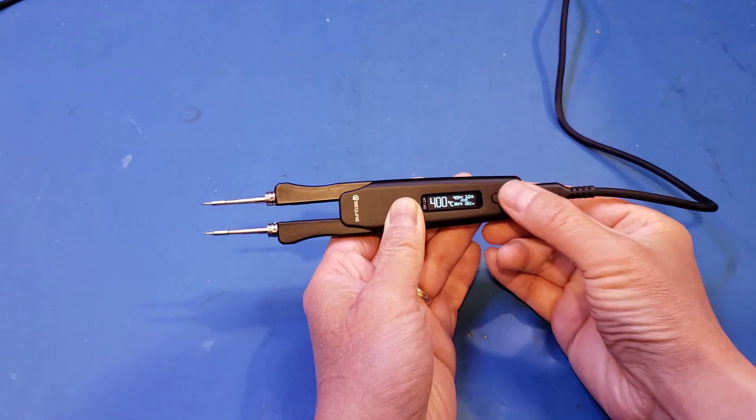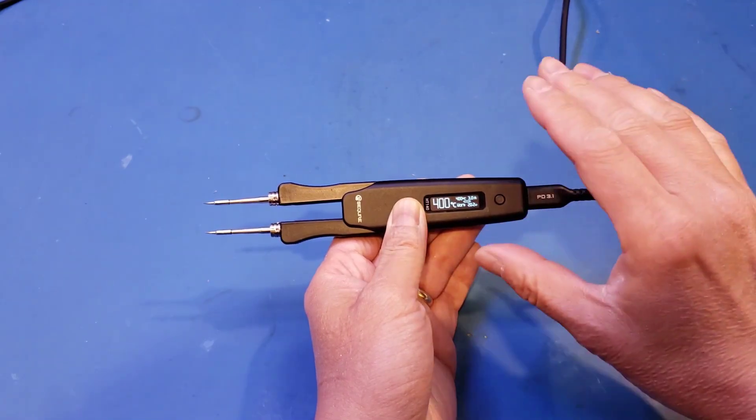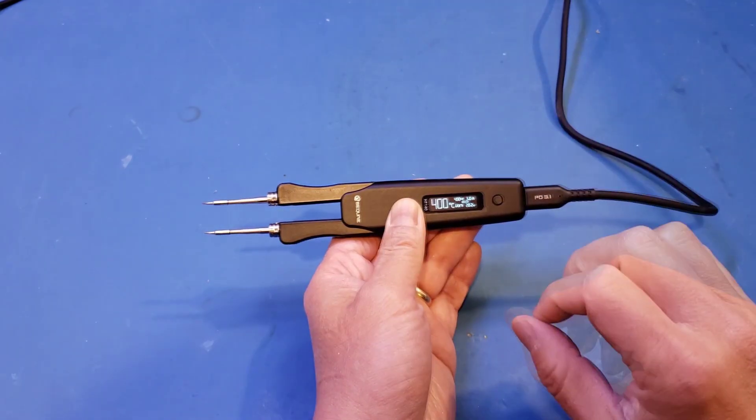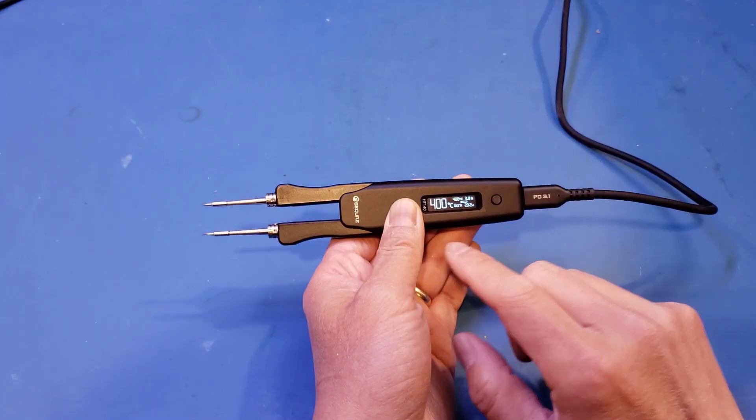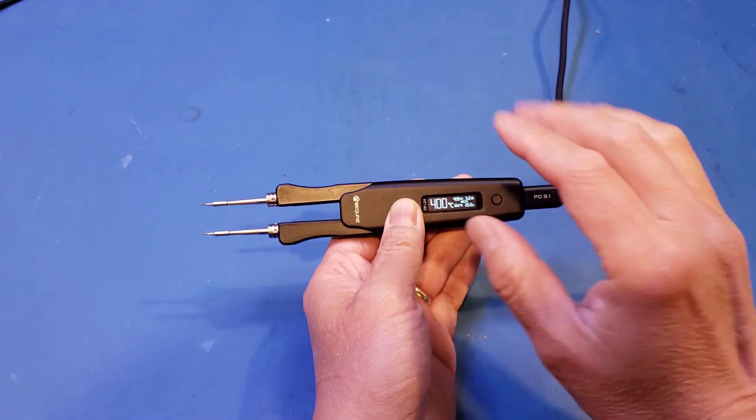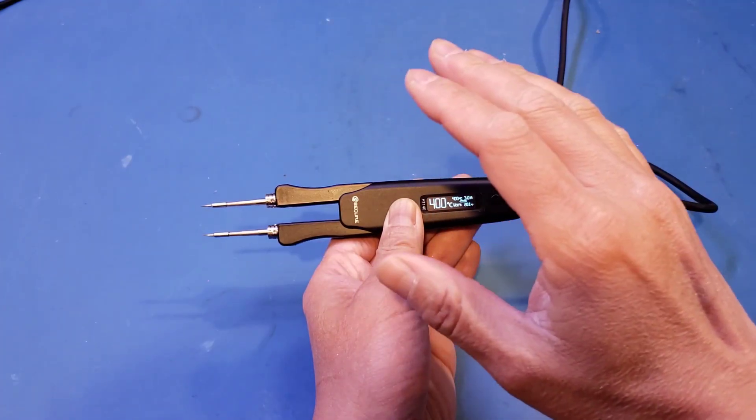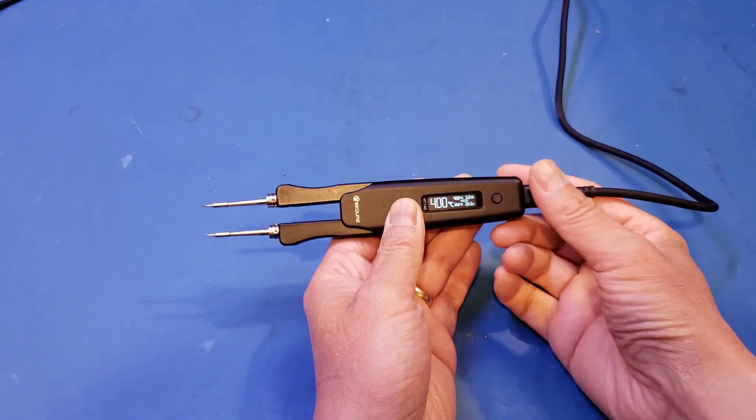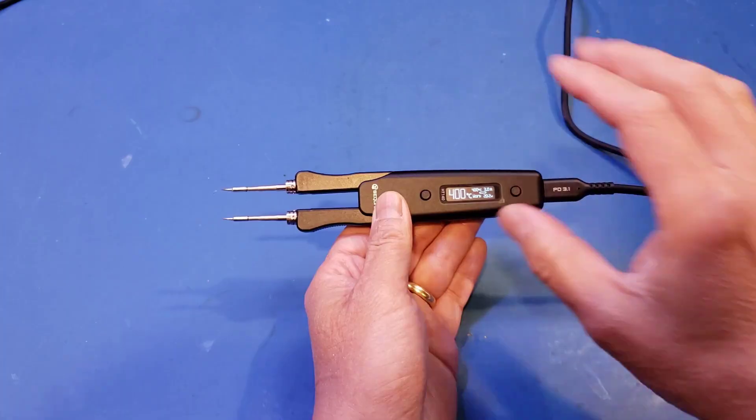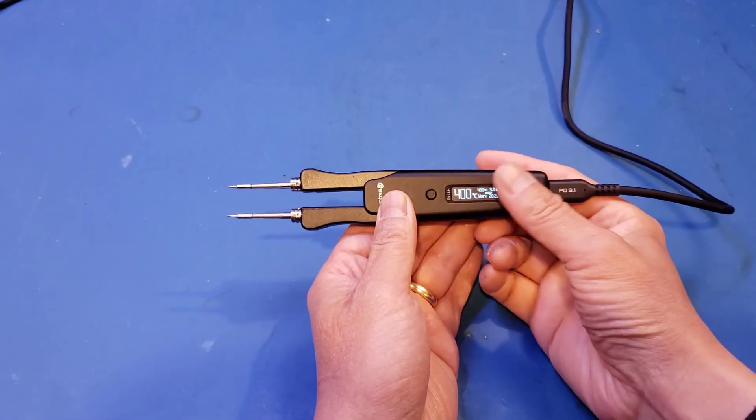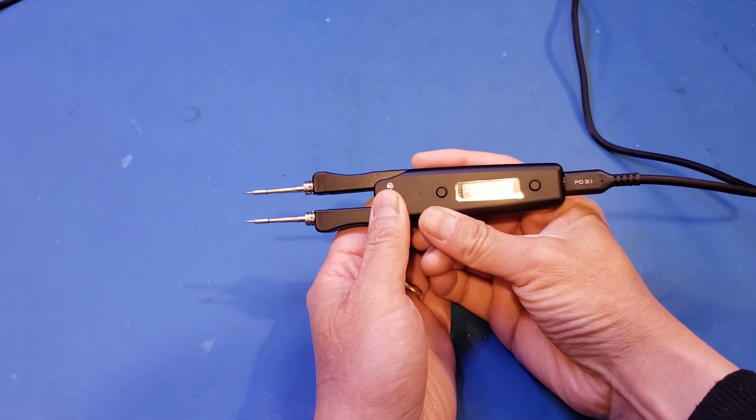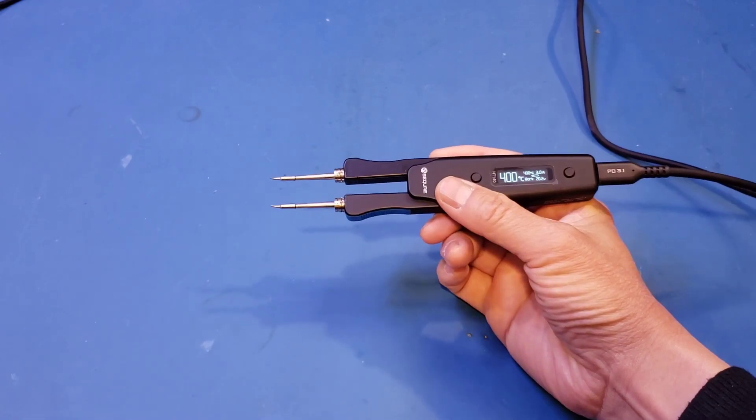Now for a desoldering iron like this, the tip temperature does not need to be that accurate. The temperature increment you saw was at 50 degrees. That is actually sufficient for a desoldering iron, as you don't necessarily need to make the tip temperature that precise, because the whole purpose for this is just to remove components. Now let's actually use the 400 degrees, try it on a few components here.